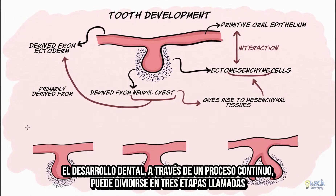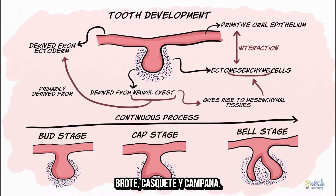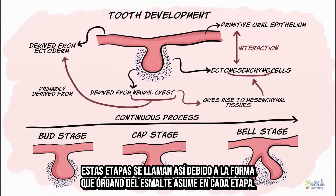Tooth development, though a continuous process, can be divided into three stages called the bud, cap, and bell stages. These stages are so named because of the shape the enamel organ assumes in each stage.